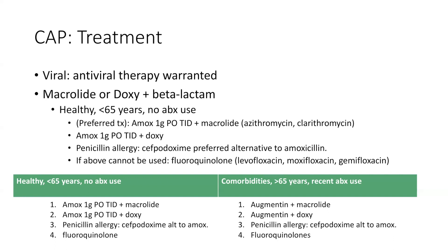I've created a chart to give you that visual because I think visual learning is amazing. So keeping it super simple — healthy, less than 65 years of age, with no prior antibiotic use: first choice is amoxicillin plus macrolide, or second choice amoxicillin plus doxy. If they have a penicillin allergy, do not give them amoxicillin — switch it with cefpodoxime plus macrolide or cefpodoxime plus doxy. If you can't use any of the above, you still have your fluoroquinolone.